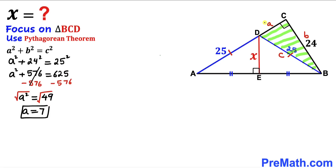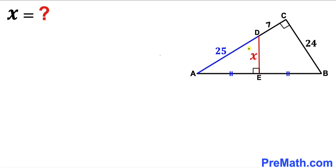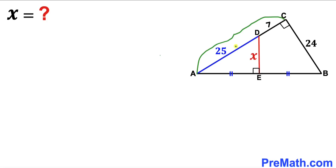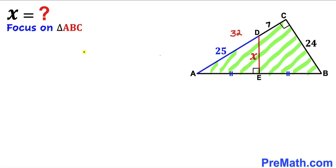So our value of a turns out to be 7. We can see that segment AD is 25 and segment CD is 7. Therefore the whole side length AC turns out to be 25 + 7 = 32.